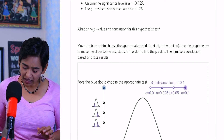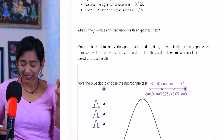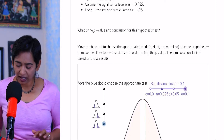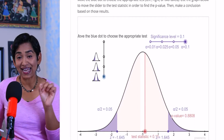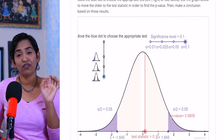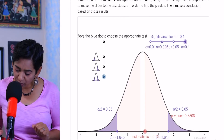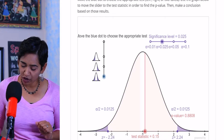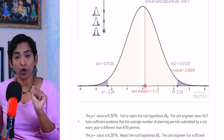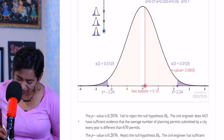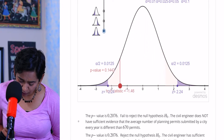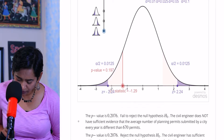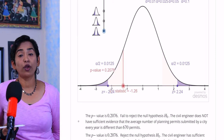Let's go into the homework section. I know it's a two-tailed test, so I'll move the tail selector to two-tailed. My test statistic is negative 1.26 and my alpha is 0.025. I move my alpha slider, then move my test statistic slider to negative 1.26 — negative is to the left-hand side.